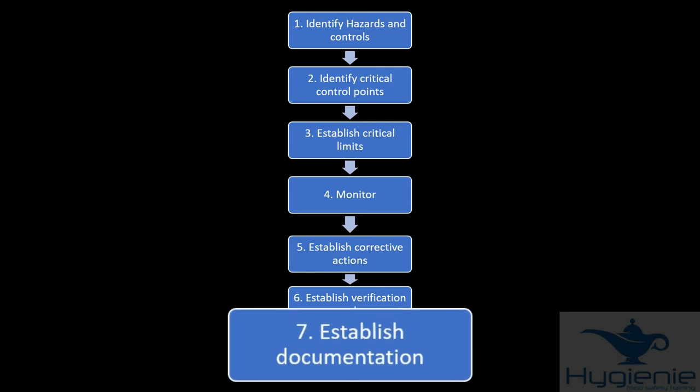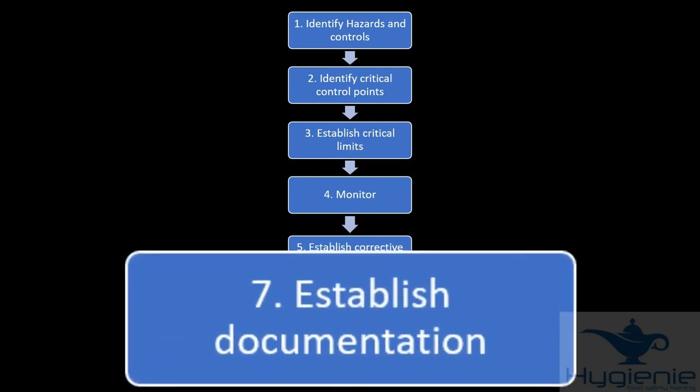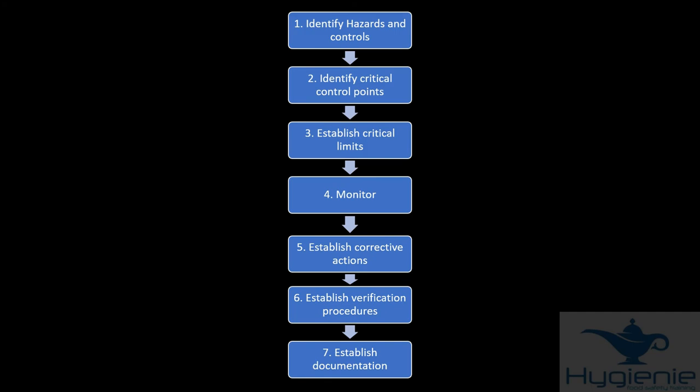Principle 7 is establish documentation. The records we complete. Examples of documentation include pre-requisite programs, detailing your procedures on personal hygiene, pest control etc. HACCP, which we've just been discussing. Temperature controls. Temperature records, detailing your delivery temperatures, fridge temperatures, cooking temperatures etc. And training records. We've now completed the seven principles of HACCP.